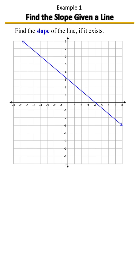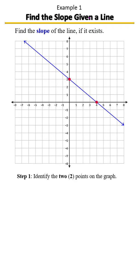Find the slope given a line. Step one, you want to identify two points on the graph. Two of the best points to use if you have them are your x and y intercepts. So let's go ahead and locate them on the graph because they are easiest to plug into the slope formula.